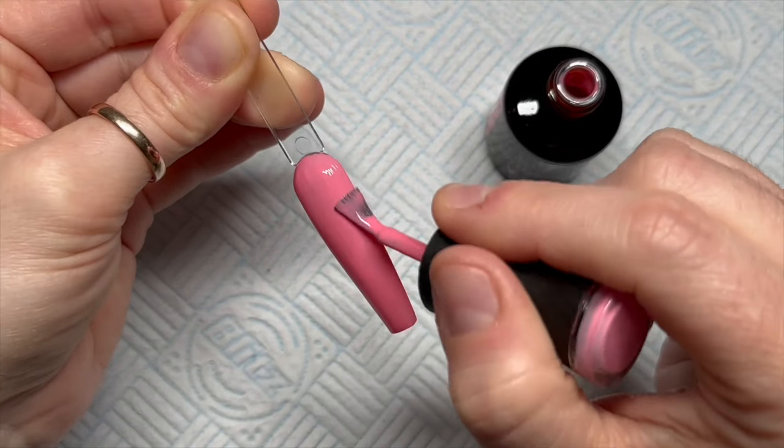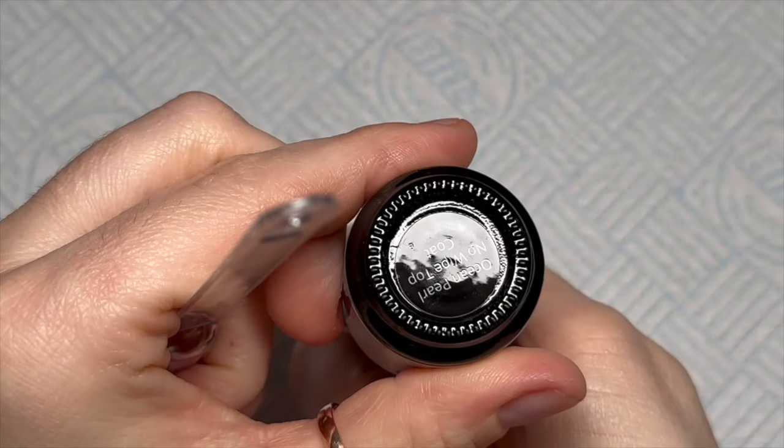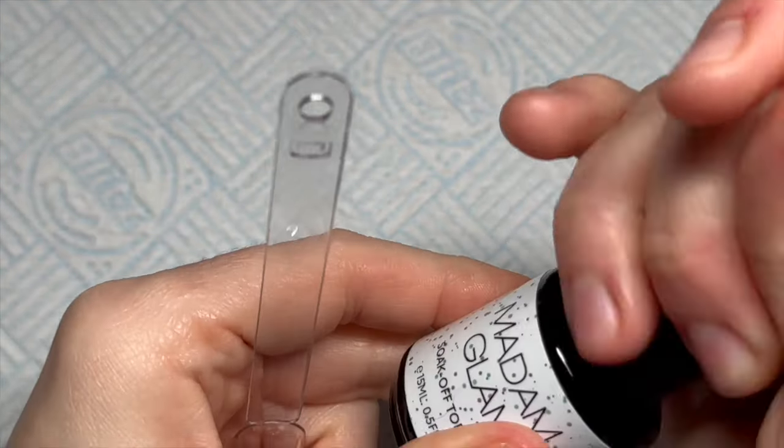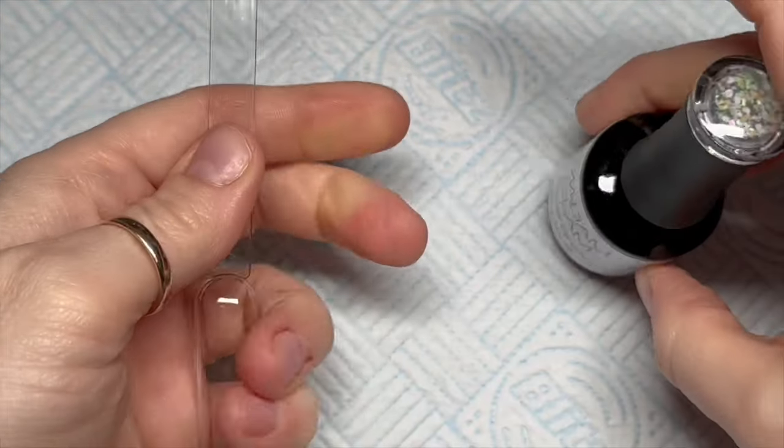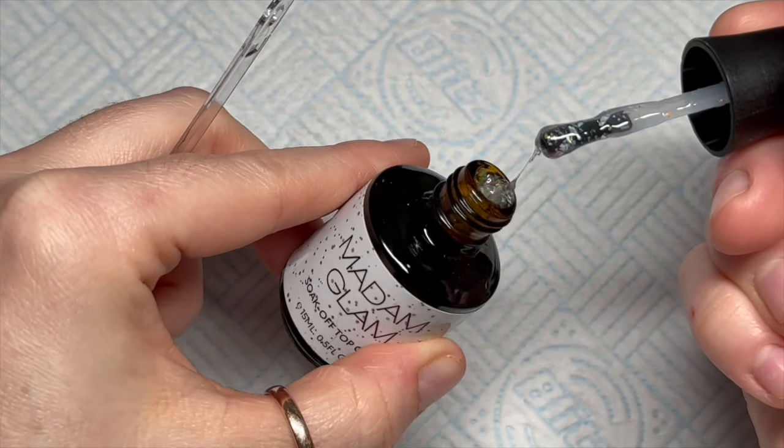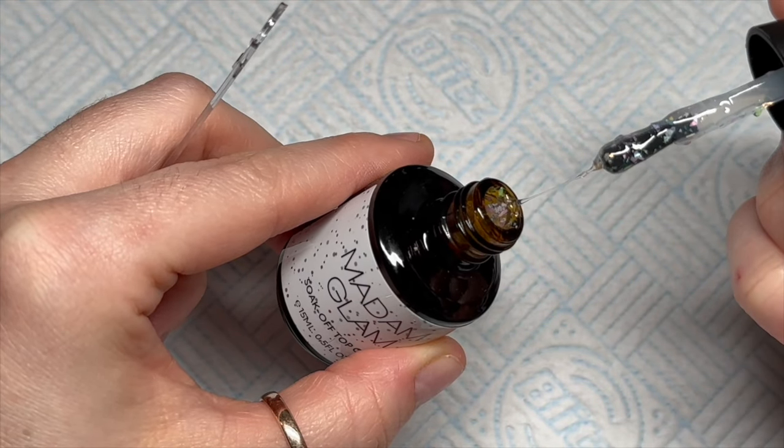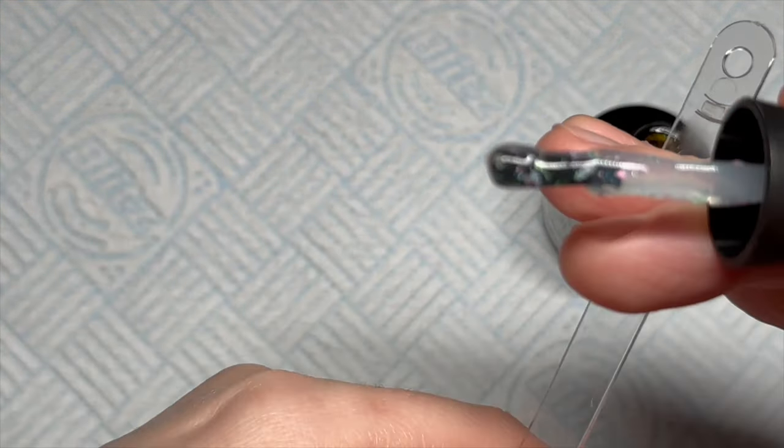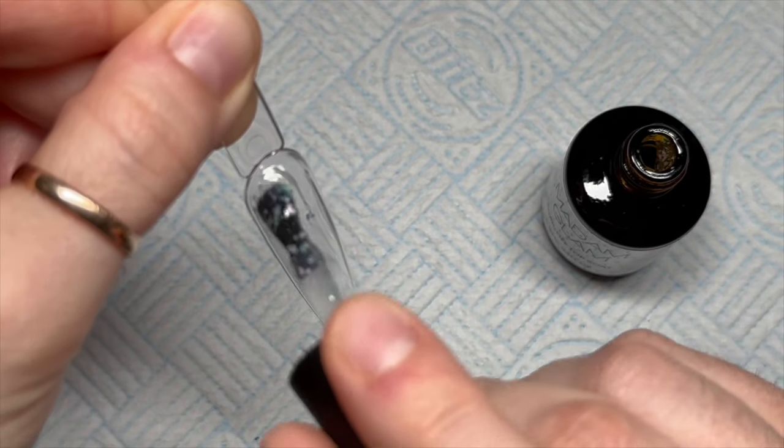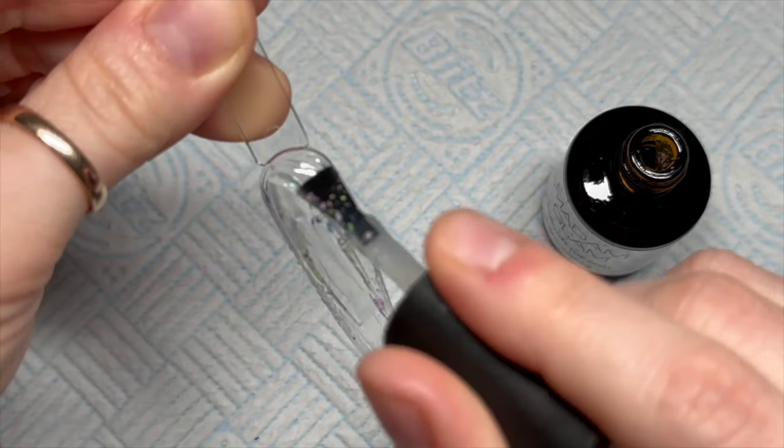This one is called Ocean Pearl No Wipe Top Coat, but it's not no wipe. It's really thick as well, it's got a very thick consistency to it. It's almost like a builder gel kind of consistency, but it's got little flaky specks in it that are really really cute, but you would need to top coat over the top of this one.